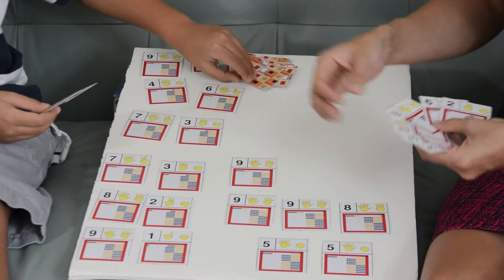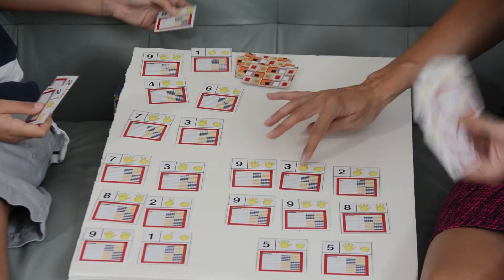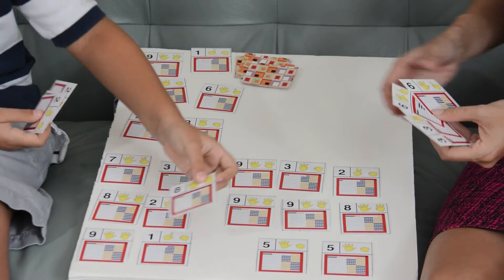Okay, so here I have one more. 9 plus 3 equals 12, minus 2 equals 10.